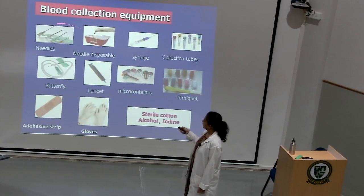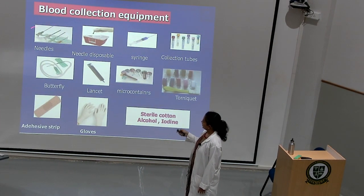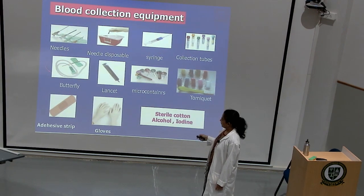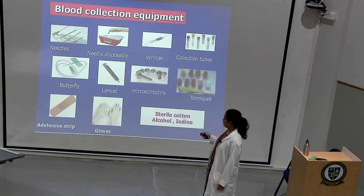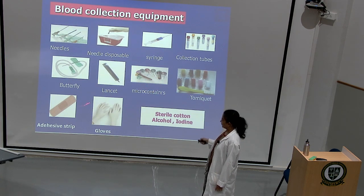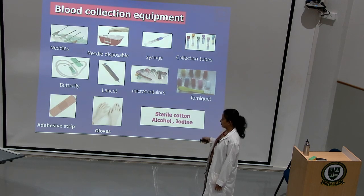Blood collection equipment includes: needles, a needle disposer, syringe, blood collection tubes or vacutainers, butterfly needle for infants, lancet for capillary blood through dermal puncture, micro containers, tourniquet, adhesive strip for sealing the site, and gloves as part of personal protective equipment.